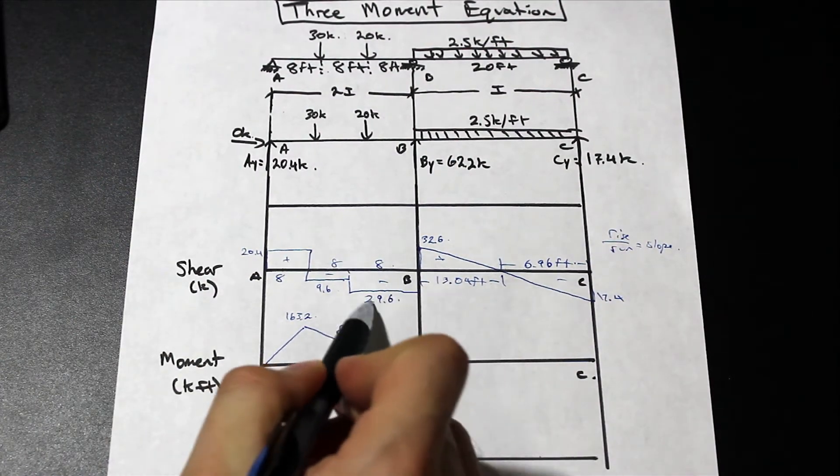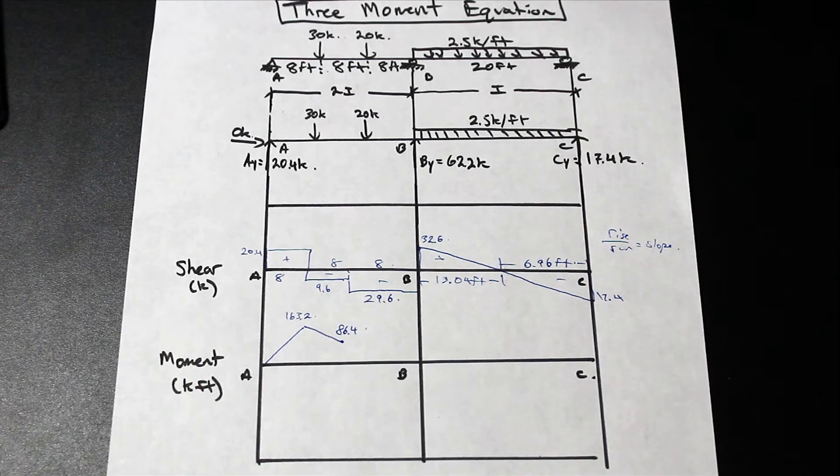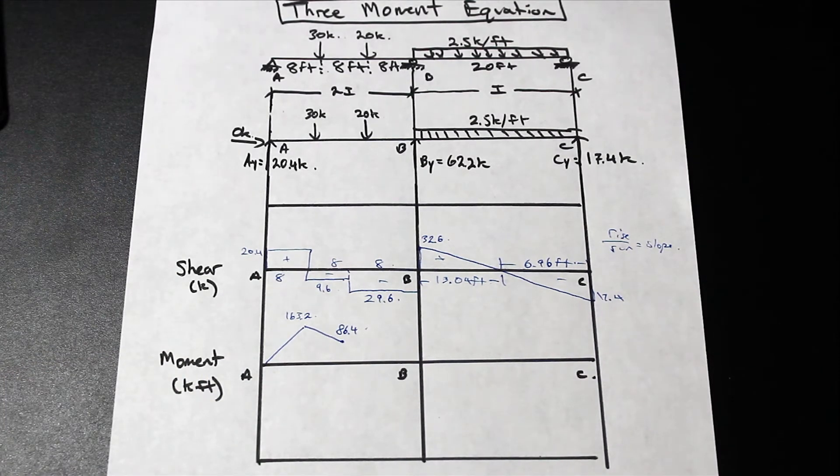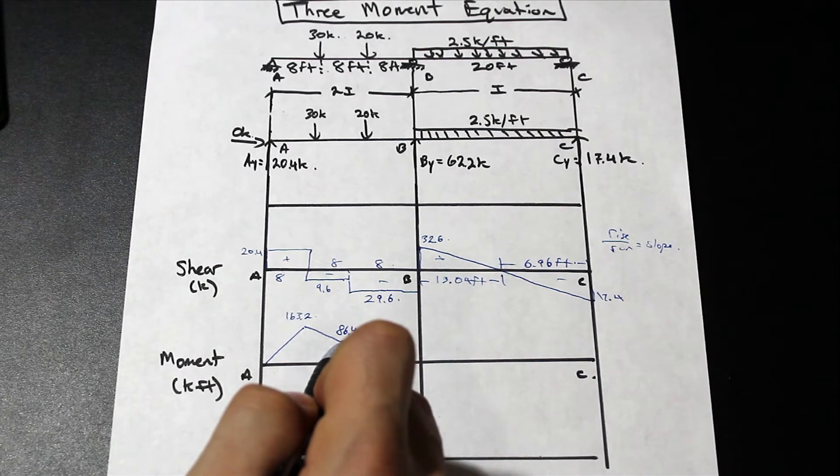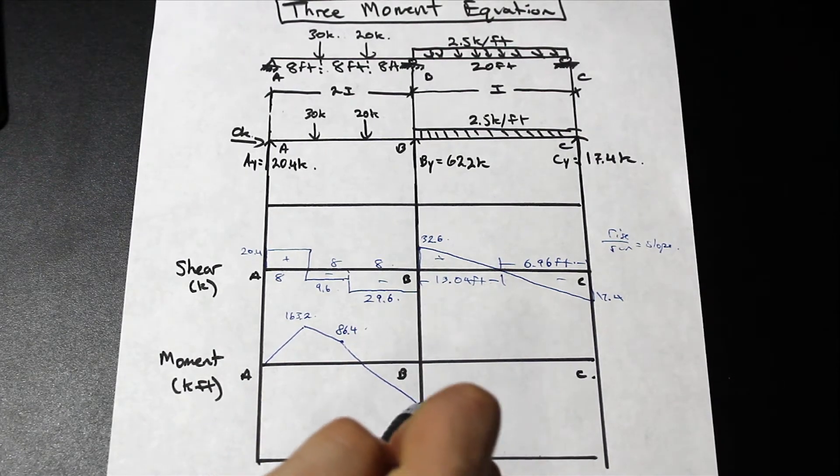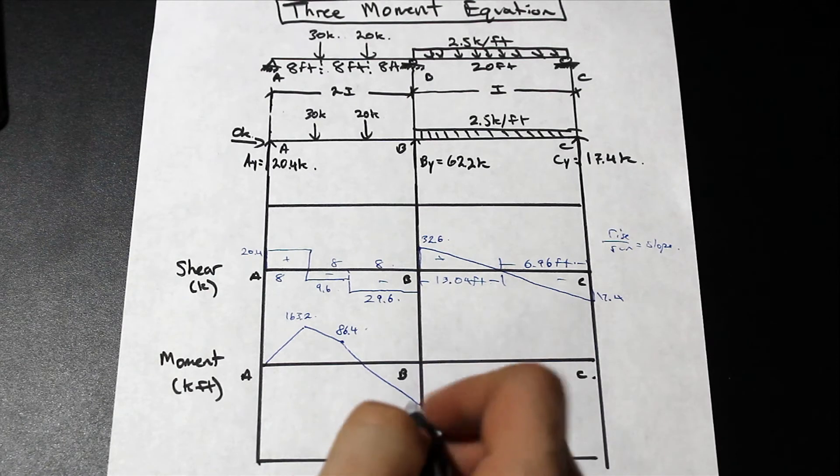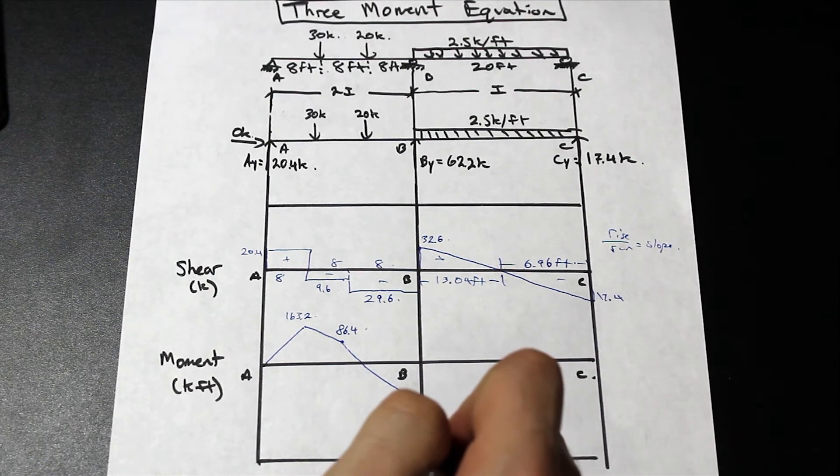And we have 29.6 negative here. So 86.4 minus 29.6 times 8, that's going to give us 150.4. So it's actually slightly different than the value that we got, but it's off by less than a kip, so that's a reasonable amount of error.